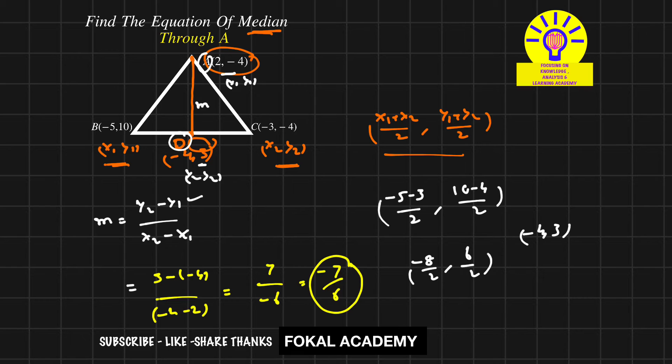Now for the equation of the median line, we use the point-slope formula: y - y1 = M(x - x1), where (x1, y1) is a point on the line and M is the slope. Taking point A(2, -4) as (x1, y1) and substituting: y - (-4) = -7/6(x - 2), which is y + 4 = -7/6(x - 2).